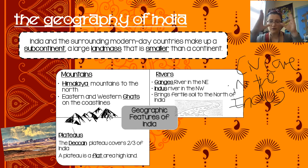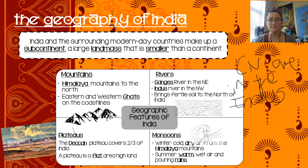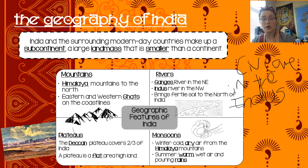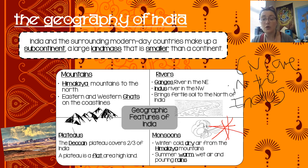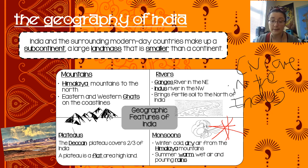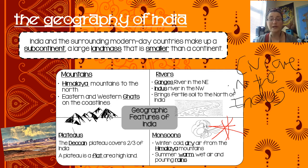When we look at our map, we'll see the Deccan Plateau kind of right in the middle of India. The last thing we want to know — and I want you to star or circle these — are monsoons. These are really important. In the winter, cold dry air gets blown down from the Himalayan mountains. In the summer, we get warm wet air and pouring rains coming off of the ocean.